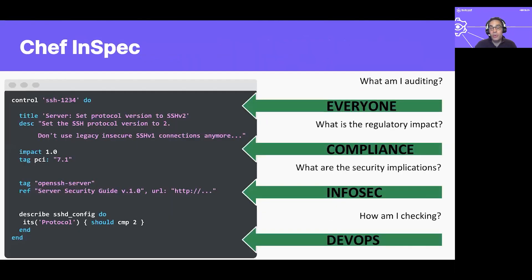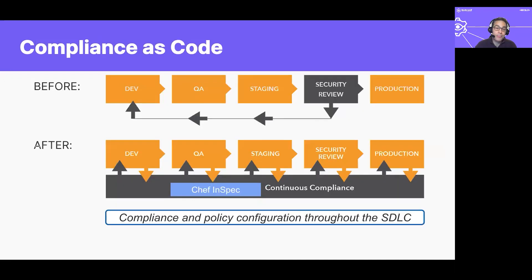Chef InSpec is an open source compliance as code project. It's a Ruby-based DSL that provides simple controls for measuring the regulatory and security impact of resources to be audited. It covers operating systems, applications, databases, APIs, cloud platforms, and can be used to scan systems remotely or locally. InSpec makes it easy to test for security and audit coverage, as well as to provide acceptance testing for our infrastructure as code. If we make scanning for continuous compliance part of our software-defined lifecycle, we can shift the audits and compliance scans to the left in our CI/CD pipelines. This helps us move fast and stay compliant without having to count on big-bang audits or gating on security reviews.